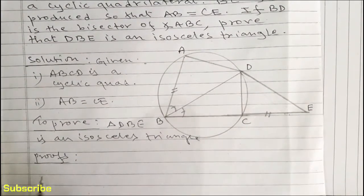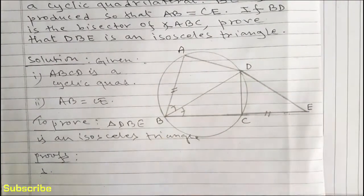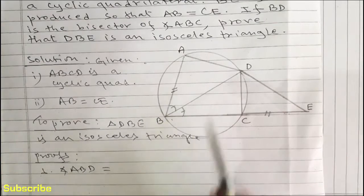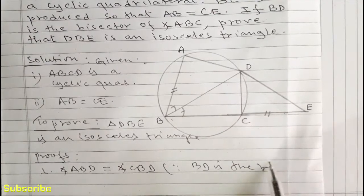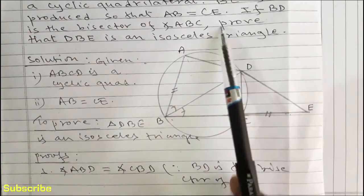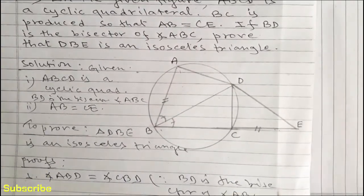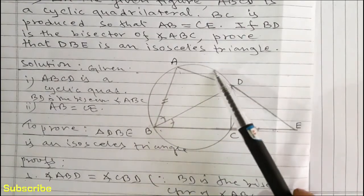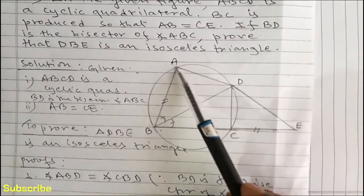In statement number 1, let us write angle ABD is equal to angle CBD. The reason is BD is the bisector of angle ABC. We are given that BD is the bisector of angle ABC. So if angle ABD and CBD are equal, then they will subtend equal arcs.